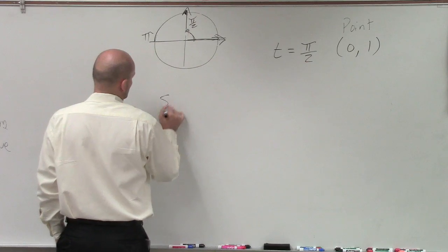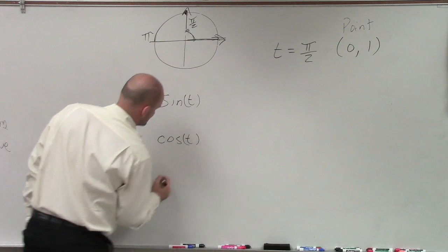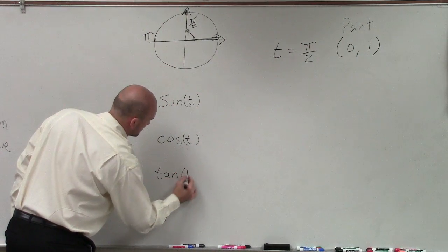Third step, write out all your trigonometric functions. So we have sine of t, cosine of t, tangent of t.